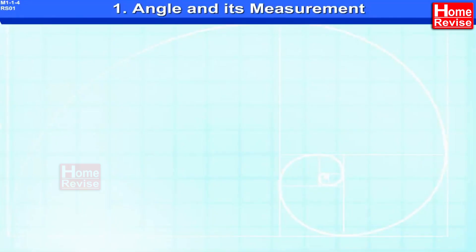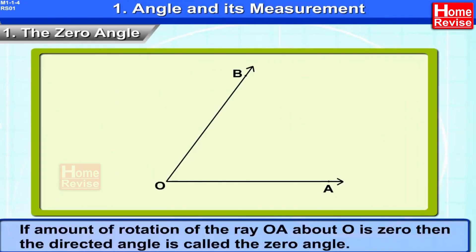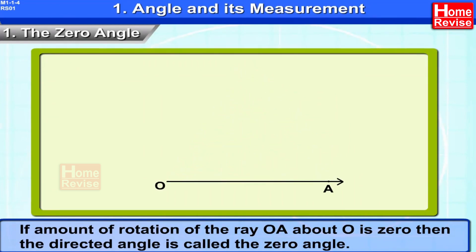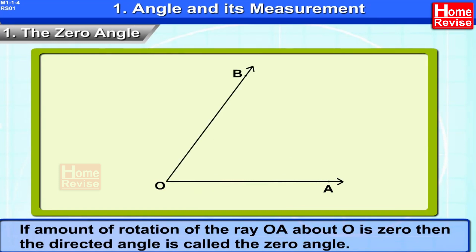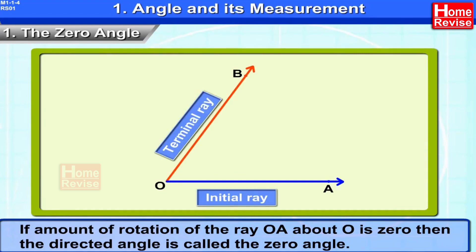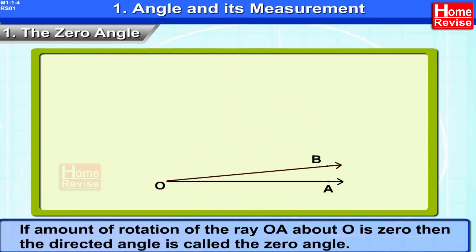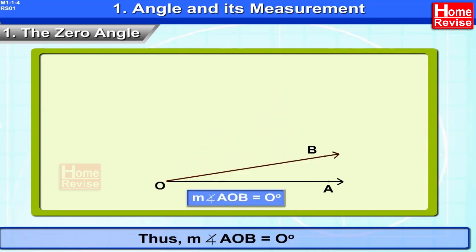Types of directed angles. 1. The zero angle: If the amount of rotation of ray OA about O is zero, then the directed angle is called the zero angle. In this case, the initial ray OA and terminal ray OB coincide, and the measure of directed angle AOB is equal to zero degrees.